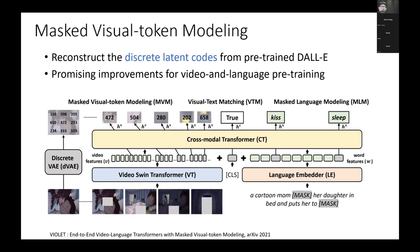A recent preprint shows that we can improve masked video modeling by using a pre-trained DALL-E model. Previously, researchers tried feature regression, but the features are high-dimensional and continuous. Using DALL-E, we can encode video patches into discrete tokens, and researchers found this is very helpful to improve training.